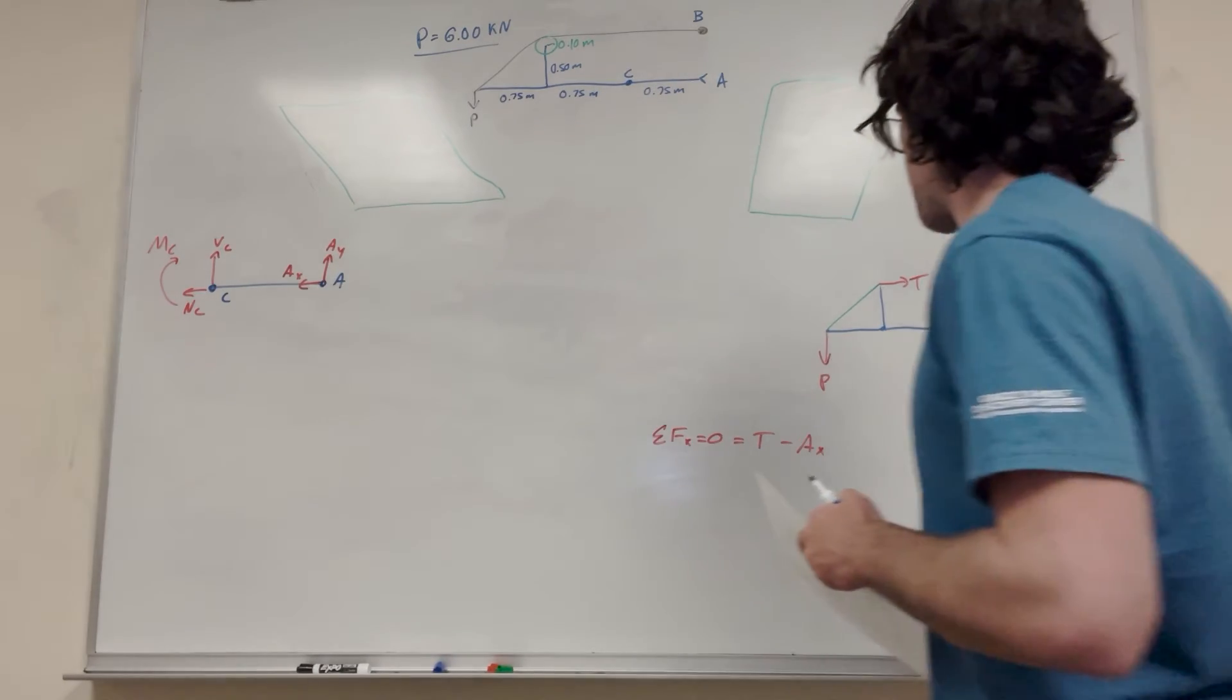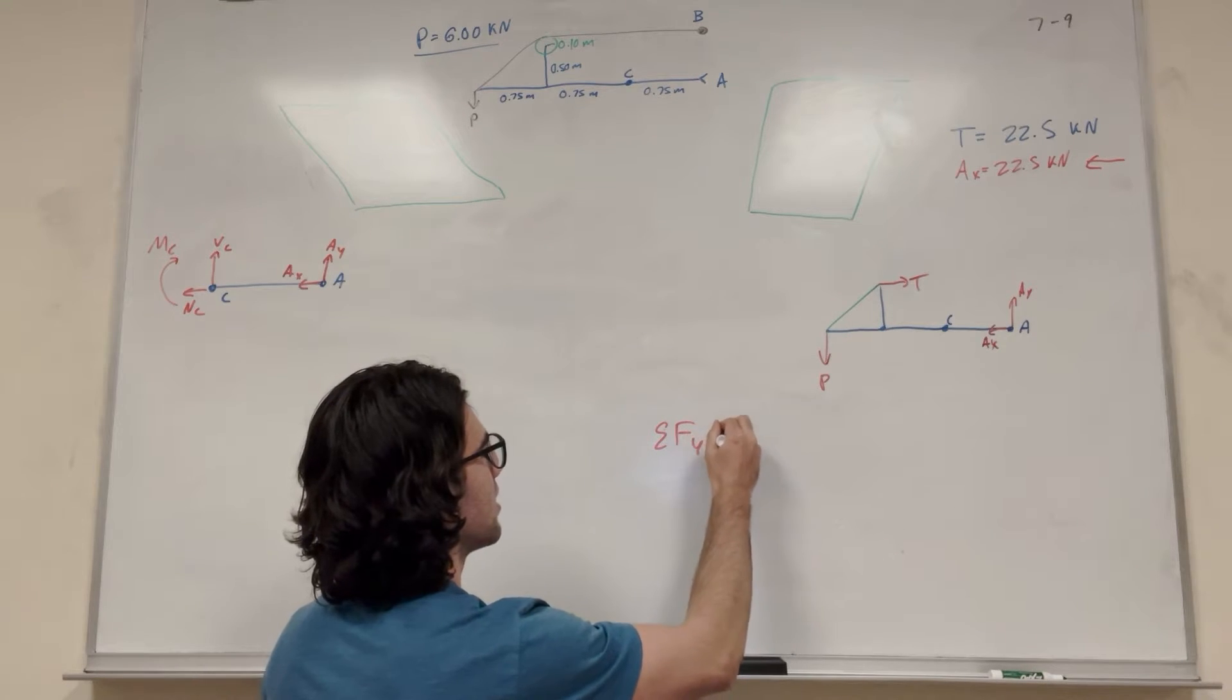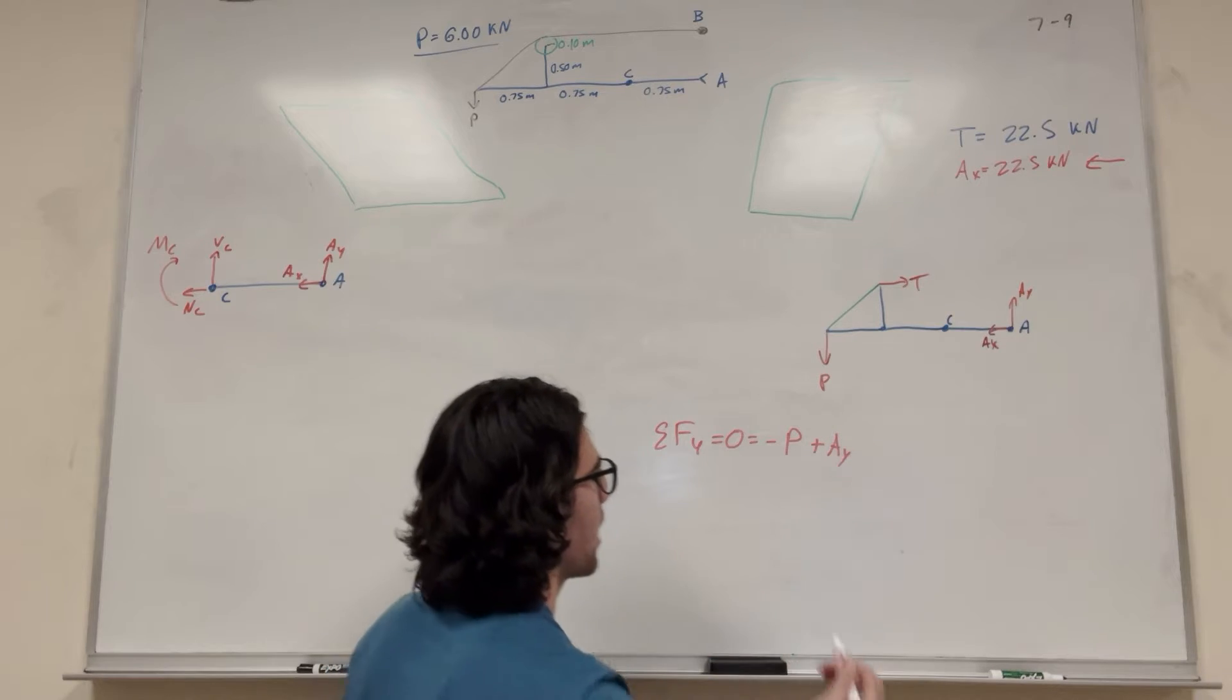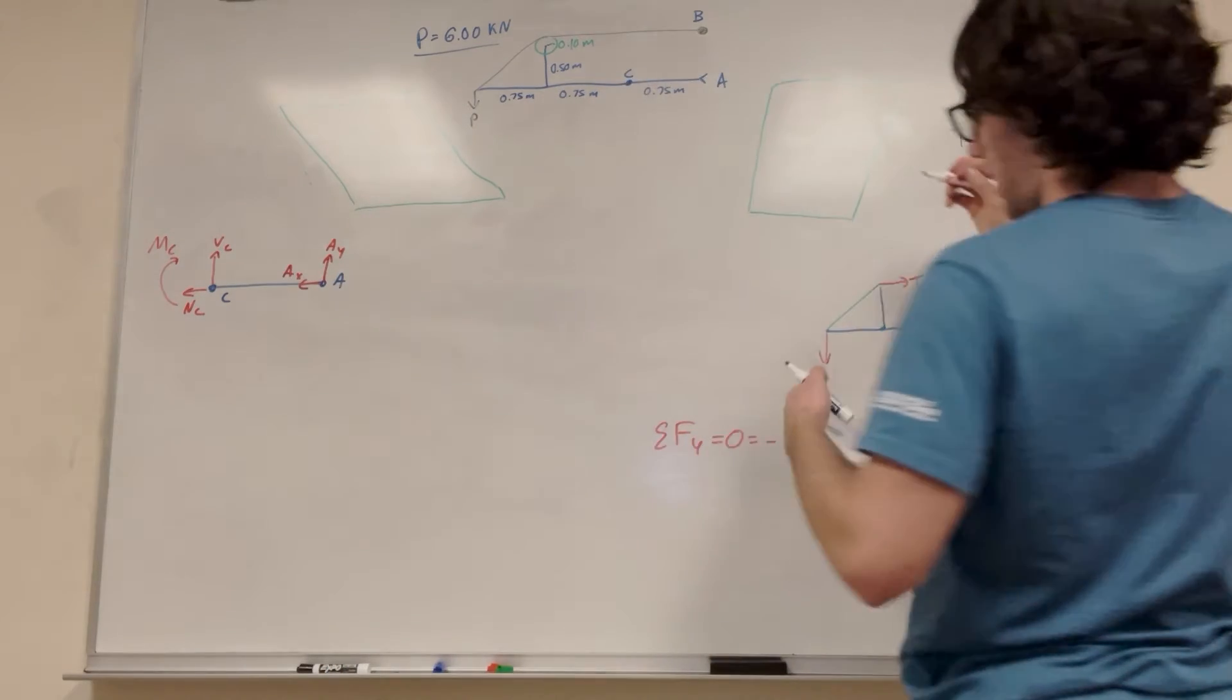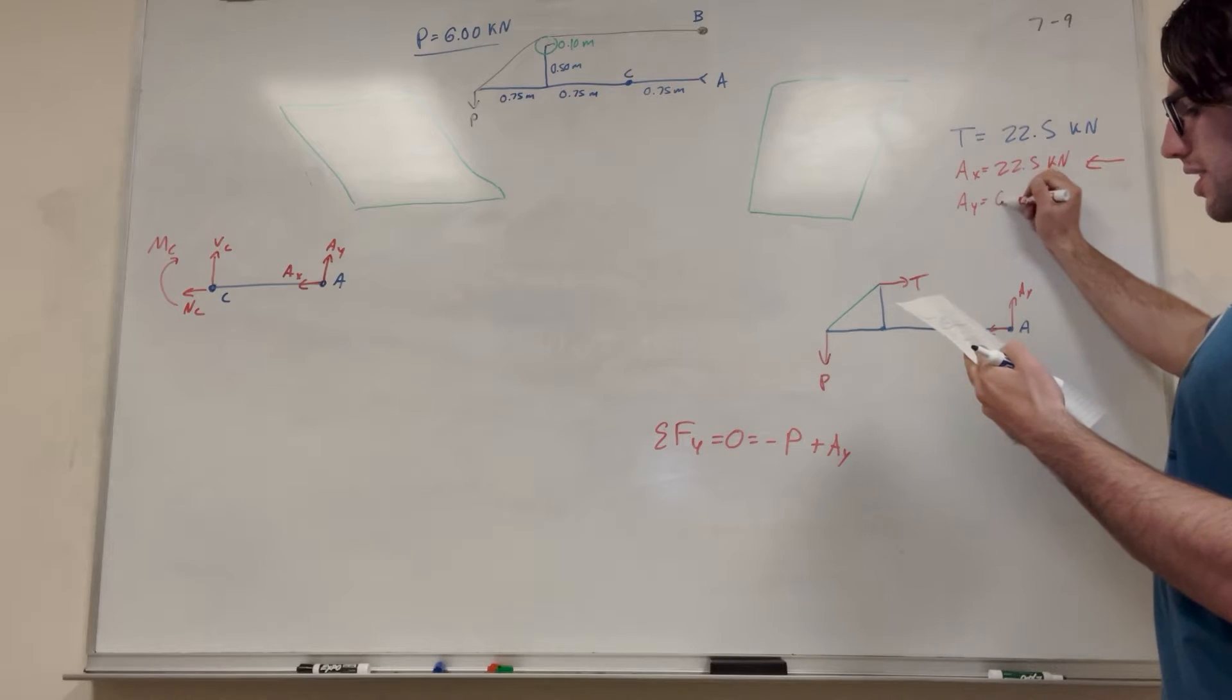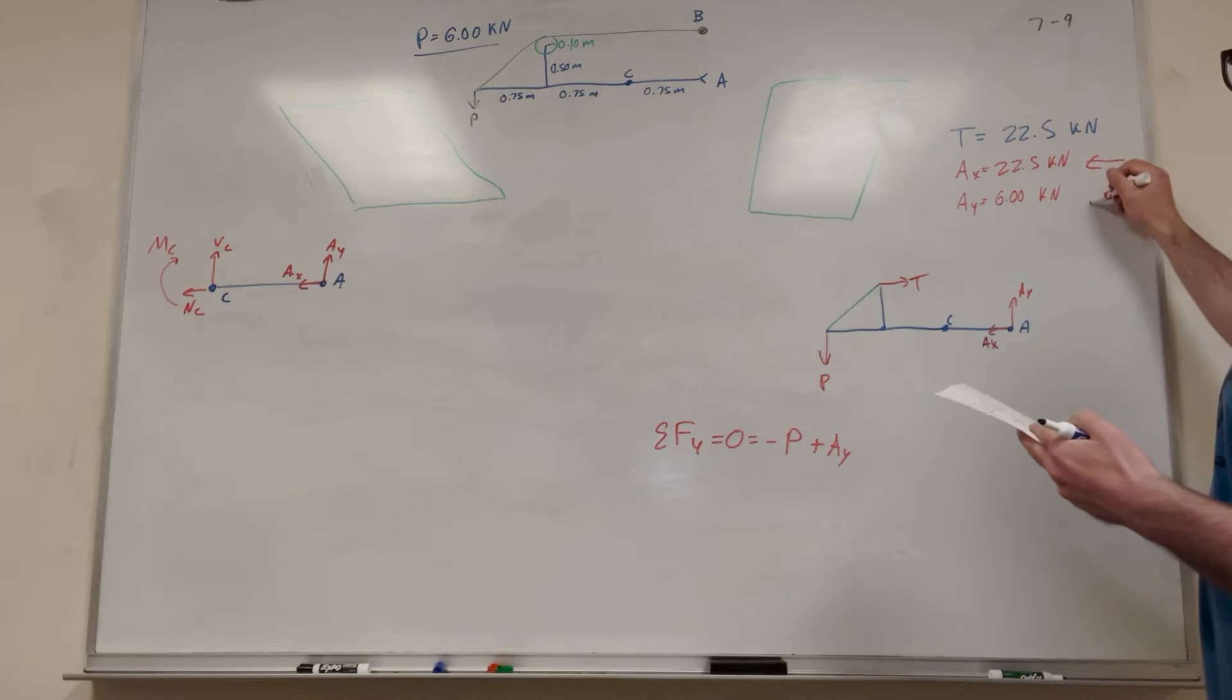And now if we do sum of the forces in the Y direction, I'll give you a hint. It's going to be two forces. That's going to be negative P plus A_y. That tells us that A_y is equal to P. So A_y is equal to 6 kilonewtons. And P pushes down, so that's going to want to push upward.